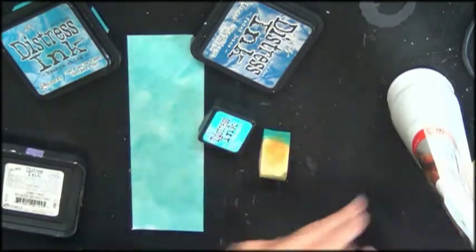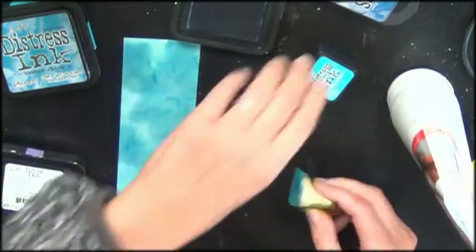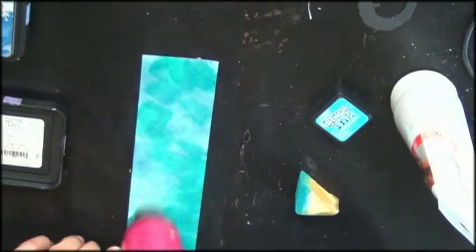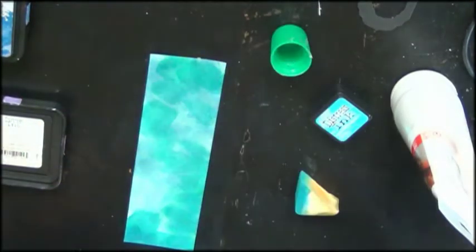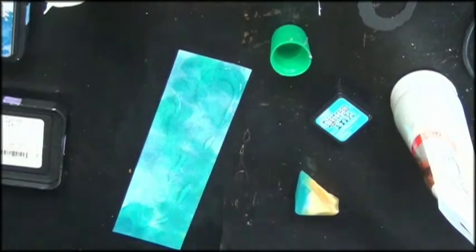You see me here starting with a piece of cardstock. I'm using three colors of distress ink: peacock feathers, broken china, and faded jeans. I'm putting them randomly all over the place, and I will be showing you a very easy and cheap crackle technique.